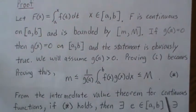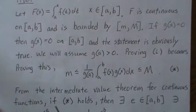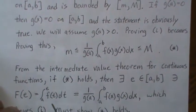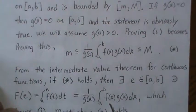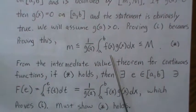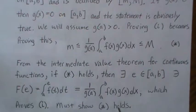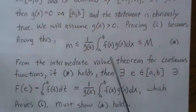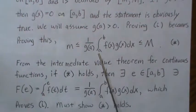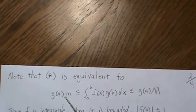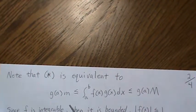From the intermediate value theorem for continuous functions — and here's the key: if this holds, then there exists an E in AB such that F of E equals this part here, which then proves statement I. So if this is true, we're done. The whole proof boils down to showing this inequality holds. Since G of A is a constant, proving star is actually equivalent to proving this.